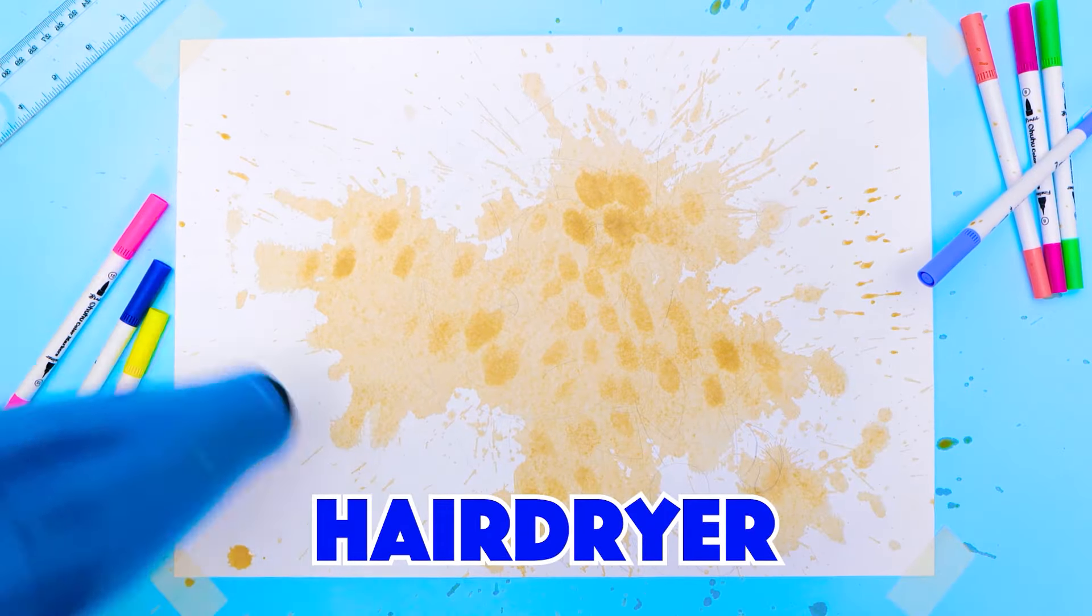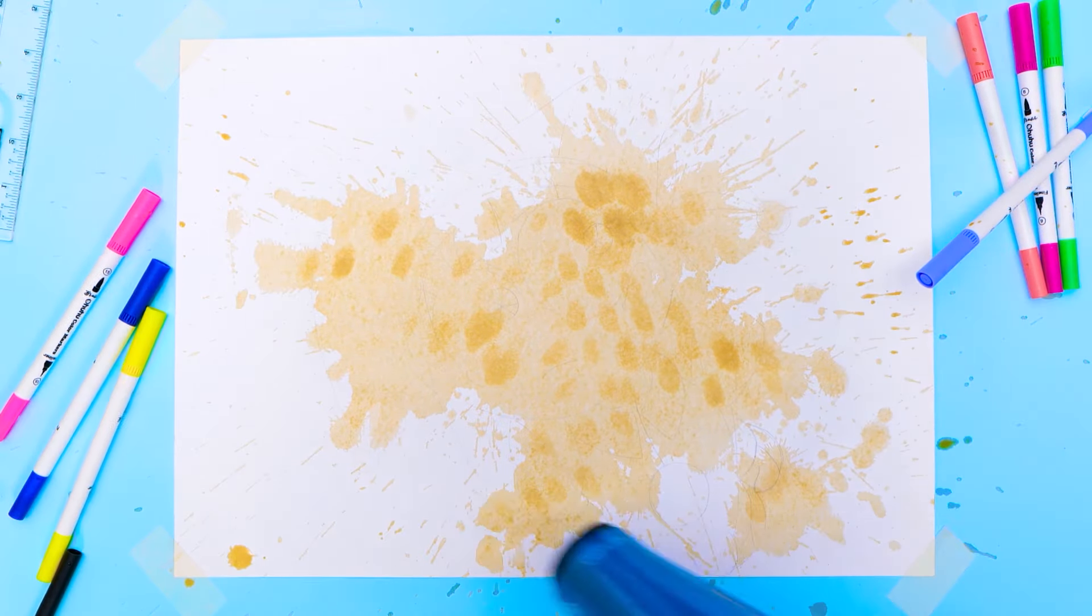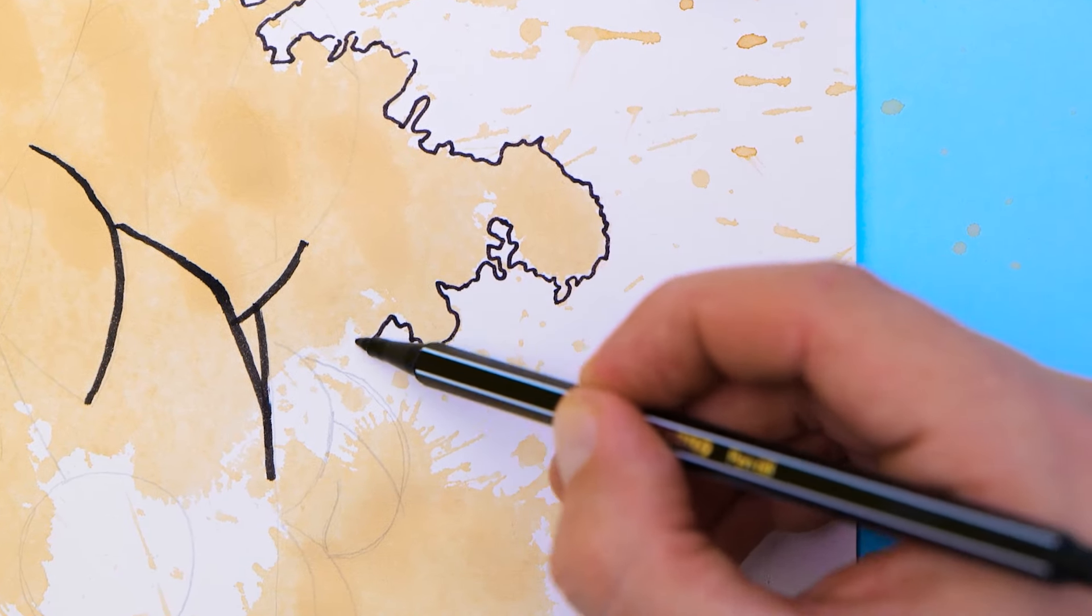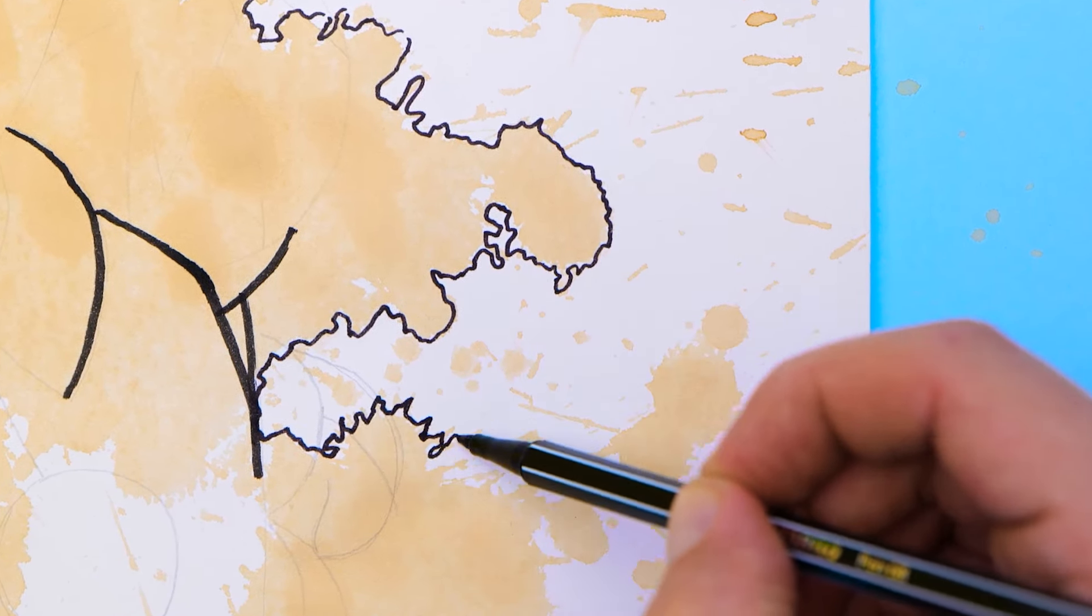The napkin absorbs the extra coffee, leaving behind a light stain. A hair dryer will help get the paper nice and dry. What's left? A faded stain from the coffee that we can draw around. You'll love how this looks when it's done, friends. I promise.